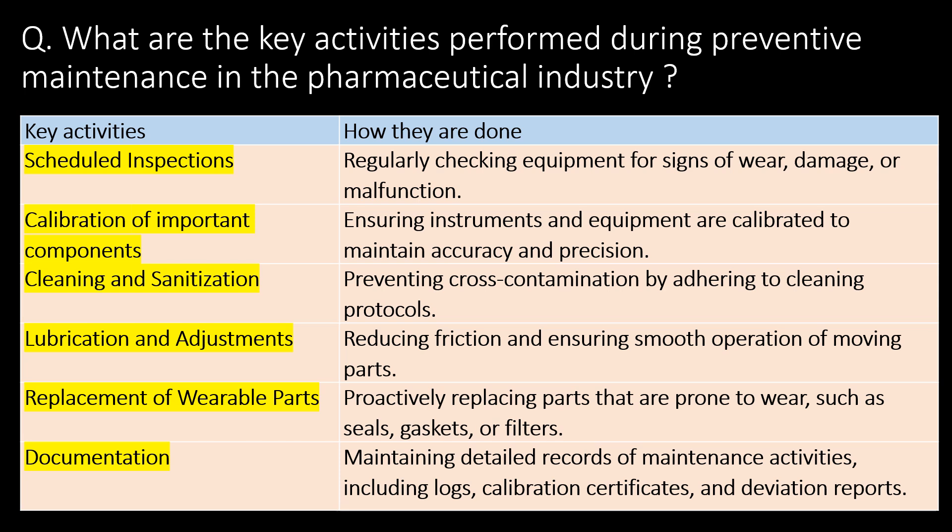Welcome. We will start with some basic questions and then go into detail. First question: what are the key activities performed during preventive maintenance of equipment or instruments in the pharmaceutical industry? The answer is: scheduled inspections, calibration of important components, cleaning and sanitation, lubrication and adjustments, replacement of wearable parts, and documentation.